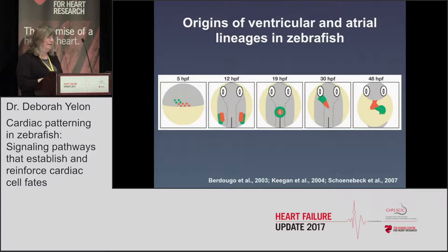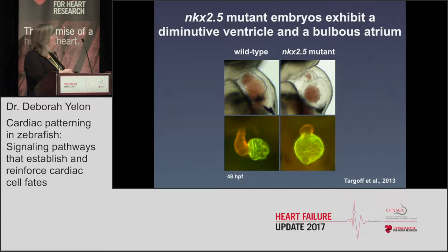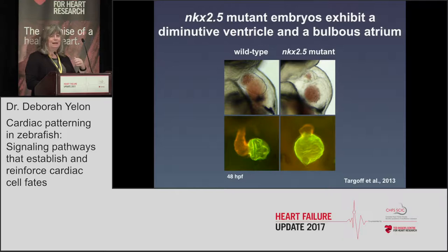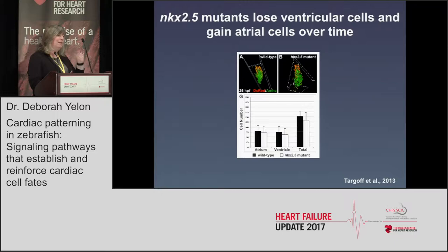We first became aware of this need for maintenance of chamber identity in the context of the zebrafish when we were looking at a mutant that disrupts the transcription factor gene NKX 2.5. In these mutants we were really struck by the phenotype — instead of seeing a normally-sized ventricle and atrium, in the NKX 2.5 mutants there's a really small ventricle and an enlarged atrium. However, specification seems completely normal in these mutants; the initial heart tube has normal numbers of ventricular and atrial cells at one day of development.